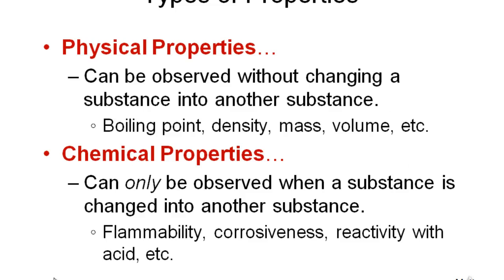Now we will look into properties and changes of matter in more detail. A physical property can be observed without changing a substance into another substance. For example, boiling point — when you boil water, liquid water is converted into water vapor, but is the chemical composition changing? It is still H₂O. It just changes its physical state but doesn't change the composition. So boiling point, density, mass, and volume are called physical properties.